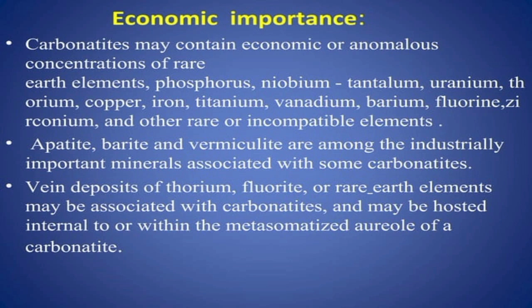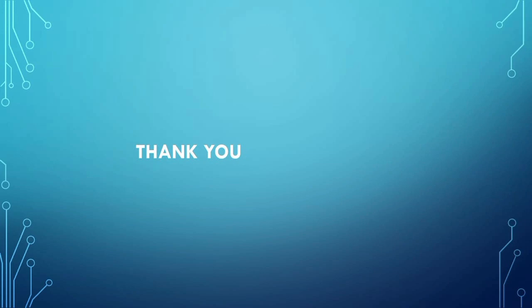Carbonatite has great economic importance as it consists of rare earth elements, phosphorus, niobium, tantalum, uranium, thorium, copper, iron, titanium, barium, etc. Apatite, barite, and vermiculite are among the industrially important minerals associated with carbonatites. Vein deposits of thorium, fluorite, or rare earth elements may be associated with carbonatites, hosted internally or within the metasomatized aureole. Carbonatites are also used as rock fertilizers, as they have a higher weathering rate than silicate minerals.